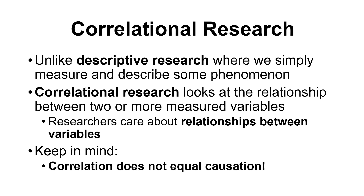These two variables might have a relationship, but we don't know the nature of that relationship. We don't know if A causes B, if B causes A, or if A and B are both being influenced by some other variable C. With correlational research, we can only make a statement that there are relationships between these variables — we can't make a statement of causality or directionality.